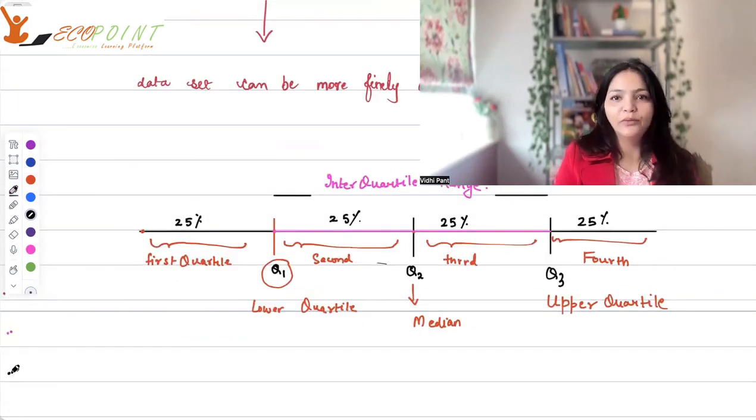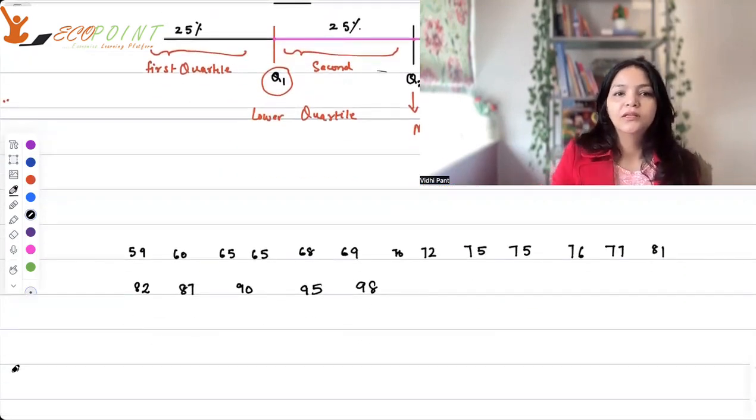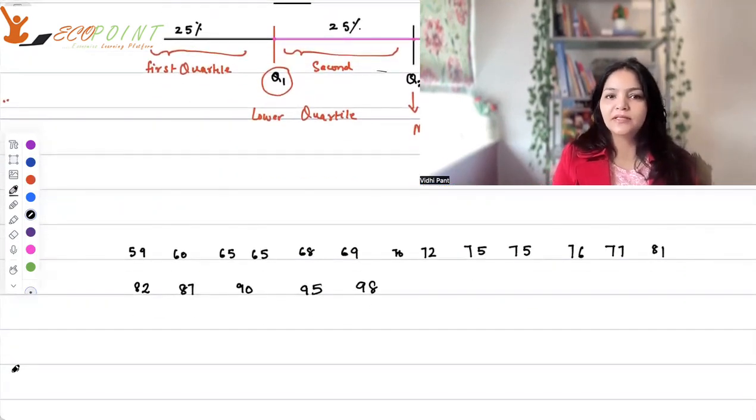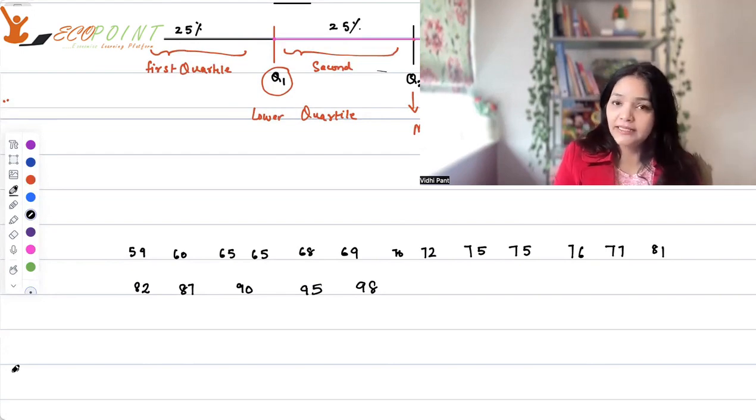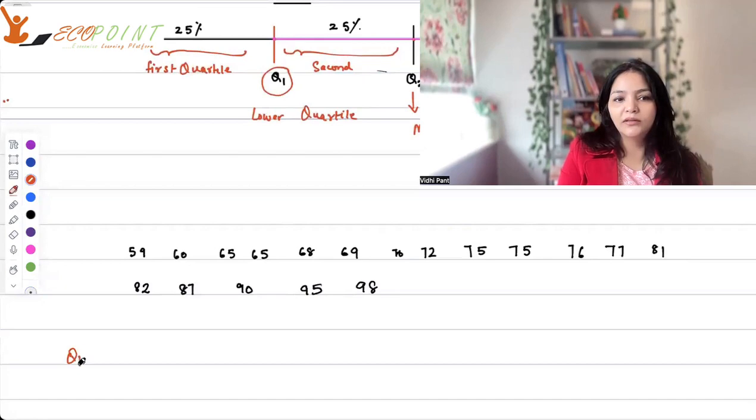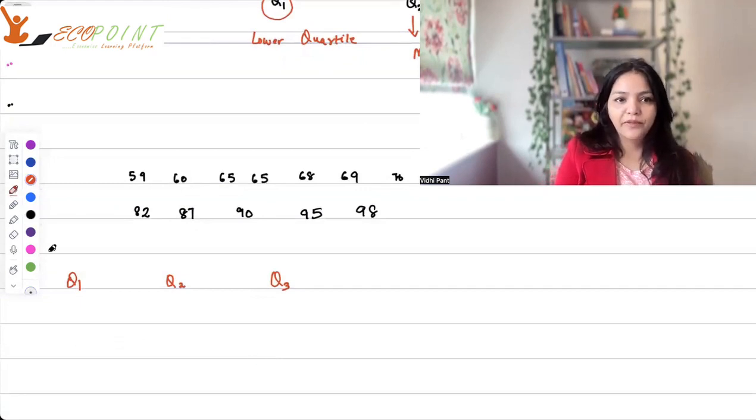Let's take an example to manually figure out quartiles. Suppose our data is 59, 60, 65, 65, 68, 69, 70, 72, 75, 75, 76, 77, 81, 82, 87, 90, 95, 98. This is your data in ascending order. I've already placed this data in ascending order. Remember always to keep the repeated values also. Now, what is your first quartile? We will calculate Q1, Q2, and Q3. So Q1 can be calculated. Q1 is (n+1) × 1/4.